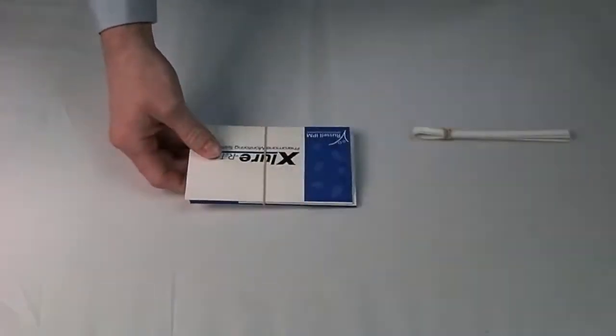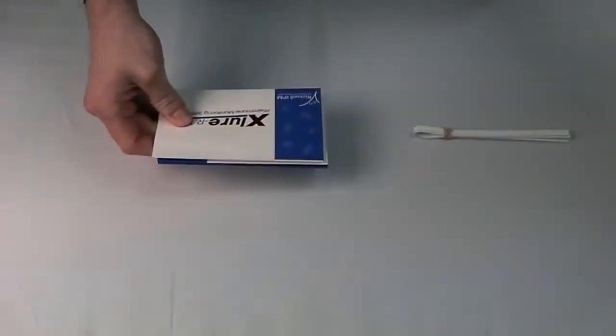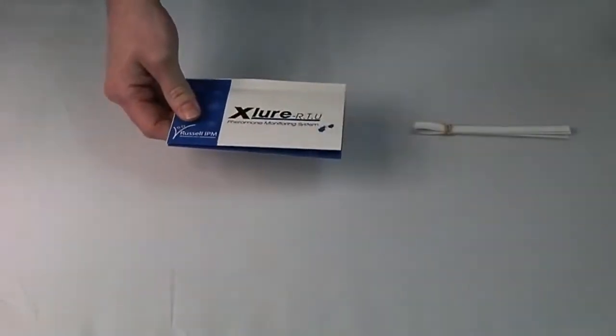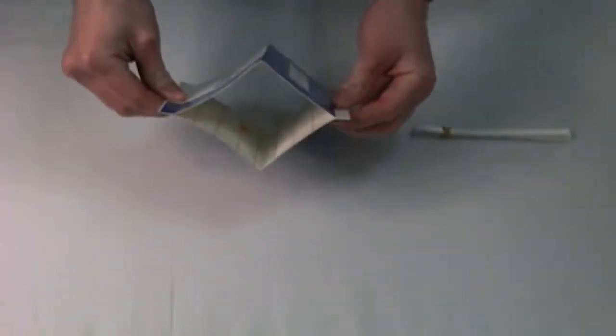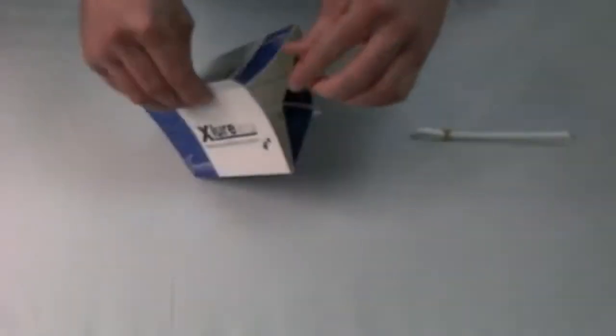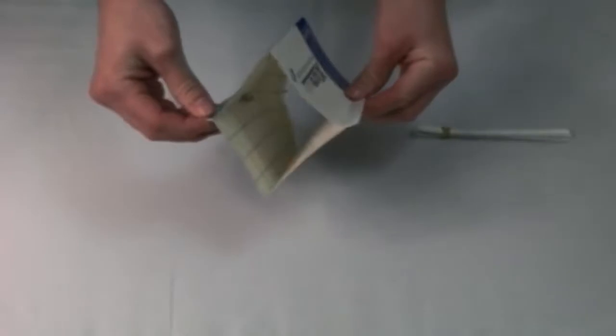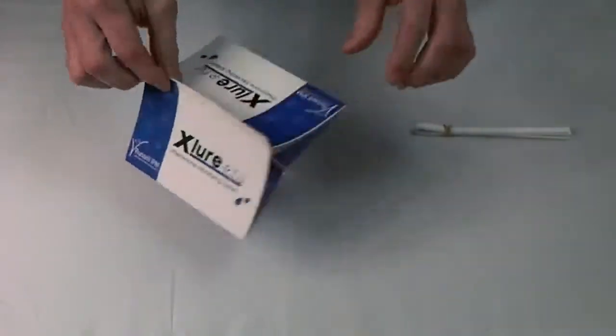Once you have done this, get one Exlure RTU trap and spread it out like so. Pull the tab from the bottom. This will give you a diamond shape, and then fold in each edge like so.